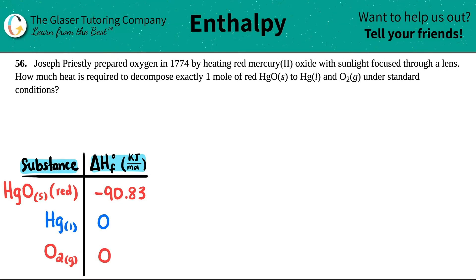Number 56. Joseph Priestley prepared oxygen in 1774 by heating red mercury 2 oxide with sunlight focused through a lens. How much heat is required to decompose exactly one mole of red HgO solid to Hg liquid and O2 gas under standard conditions?